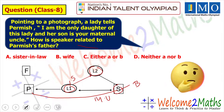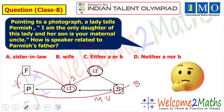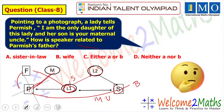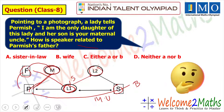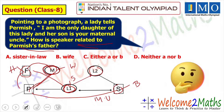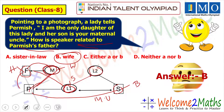We need to find how L1 relates to Parmish's father (F). Since S is Parmish's maternal uncle, L1 is Parmish's mother (M). So F and M are husband and wife. Therefore, L1 — the speaker — is Parmish's father's wife. We have four options A, B, C, D, and option B is 'wife,' so that is our answer.